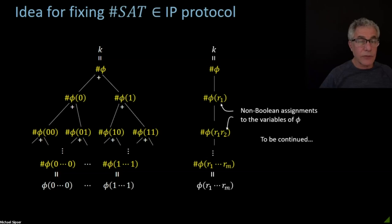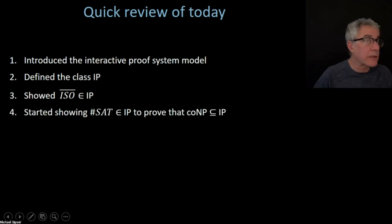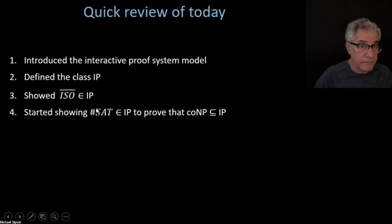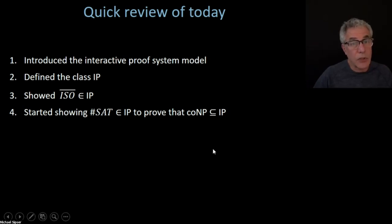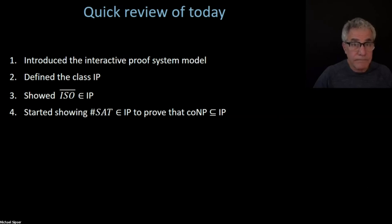In a similar question, why is this any different from just nondeterministically guessing the assignments? It's because of this — we're really setting the stage. So what we did today was we introduced the model and defined the complexity class. We showed that non-ISO is in IP, which is really worth understanding: this protocol, making sure you're comfortable with that, and also the model itself. And so for Tuesday's lecture, we're going to finish this up — we started showing that number set is in IP, which is what we need to do to prove co-NP is in IP. We'll finish that next time, which will be our last time.